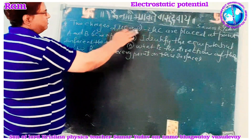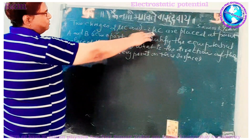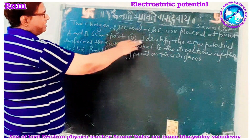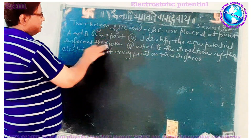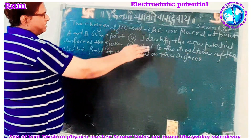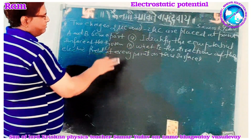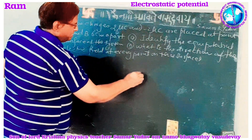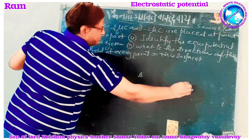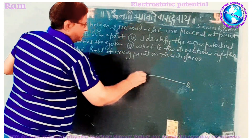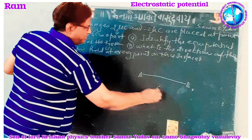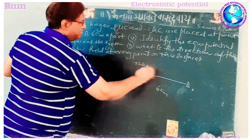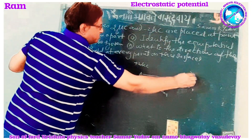The numerical is as follows: two charges, plus two micro coulomb and minus two micro coulomb, are placed at points A and B, six centimeters apart. We need to identify the equipotential surface of the system and find the direction of the electric field at every point on this surface.